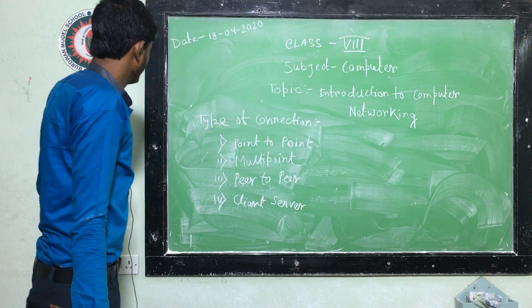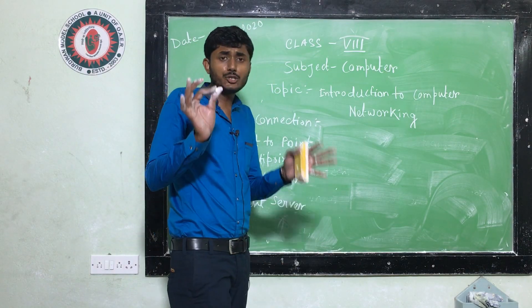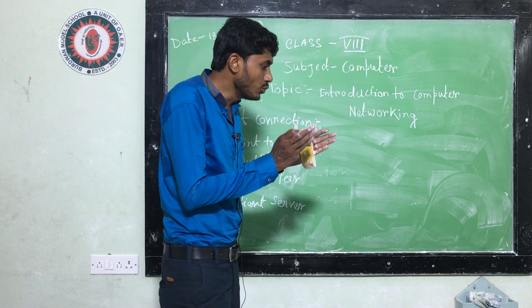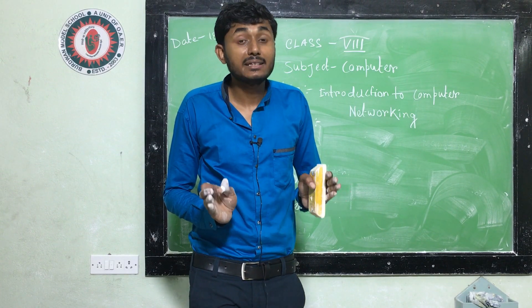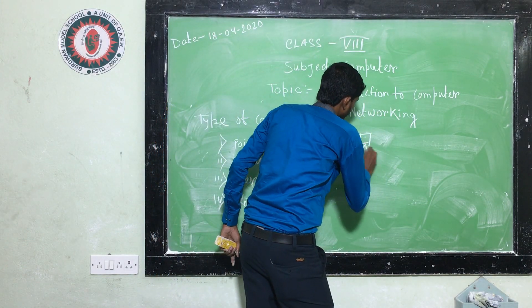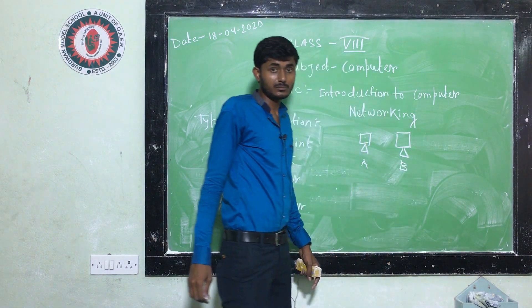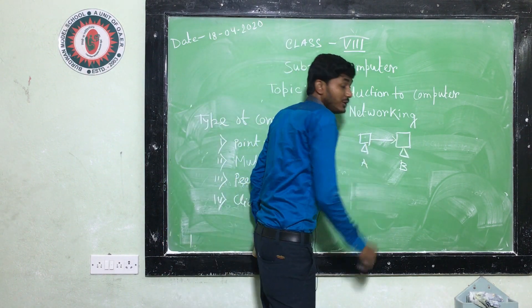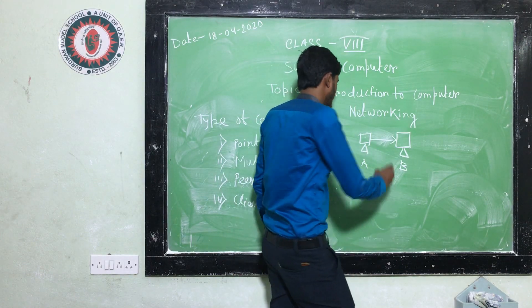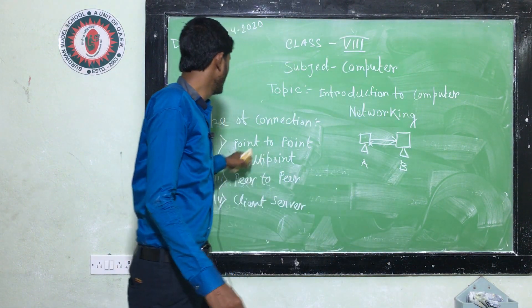Point-to-point means when only two computers are connected to each other and they can send data or receive data. This is called point-to-point. Suppose two computers are there — Computer A and Computer B. This is the example of point-to-point. Here, Computer A or Node A can send data to B and receive data from B.